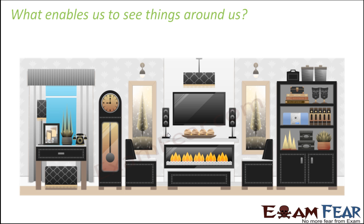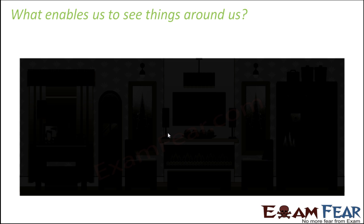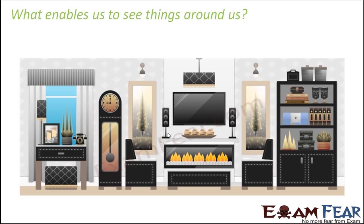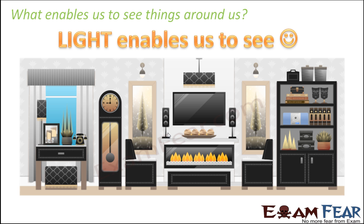What is the primary thing required to see these things? Many of you might say that our eyes help us to see. Yes, of course you have your eyes. But if eyes were the only thing that enable you to see, then what is that magic that happens in the dark? If I switch off all the lights in a room, will you be able to see the things present there? No. When you switch the light back on, you are again able to see everything. So light enables us to see.